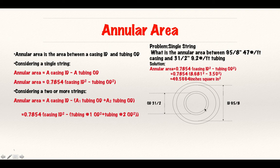When I break that down, I get 0.7854 casing ID squared minus tubing OD squared. One thing to really take into consideration is that I'm given a casing of 9 5/8, but when calculating my annular area, I want the ID because this is the area I'm looking for.